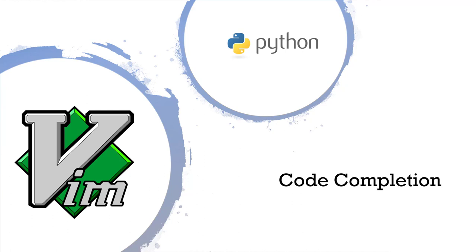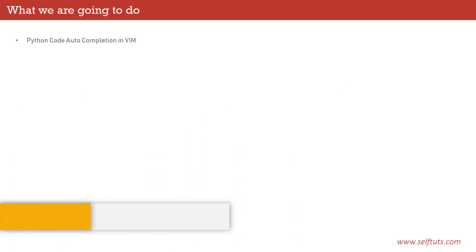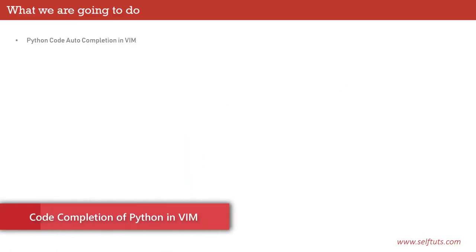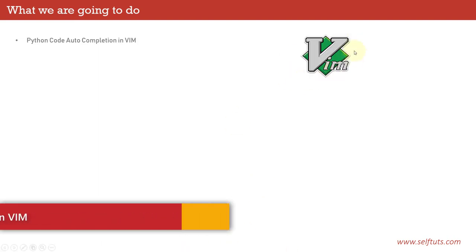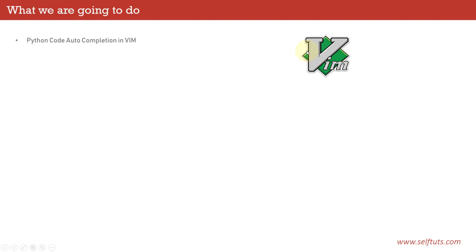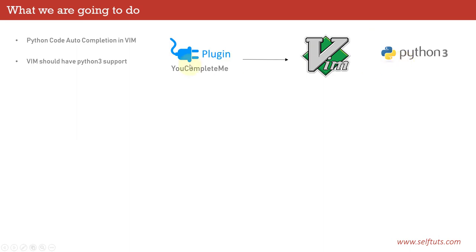So what we are going to do in this particular tutorial: we are going to do Python code auto completion in Vim. There is a Vim installed on your system — we'll install the latest version of Vim, that is Vim 8.1 currently, and then we'll compile that Vim with Python 3 support. We'll use the YouCompleteMe Vim plugin and inject it into Vim so that auto code completion for Python works.